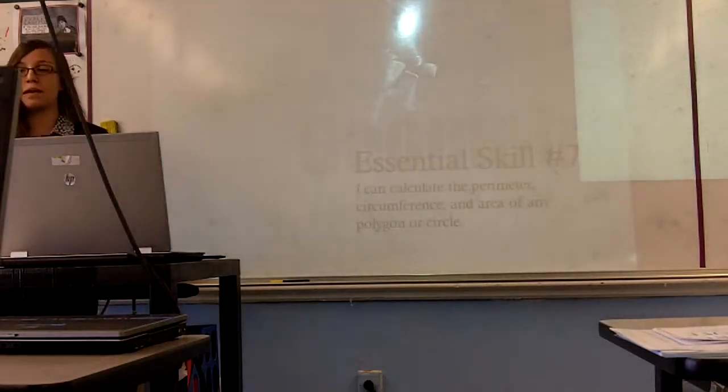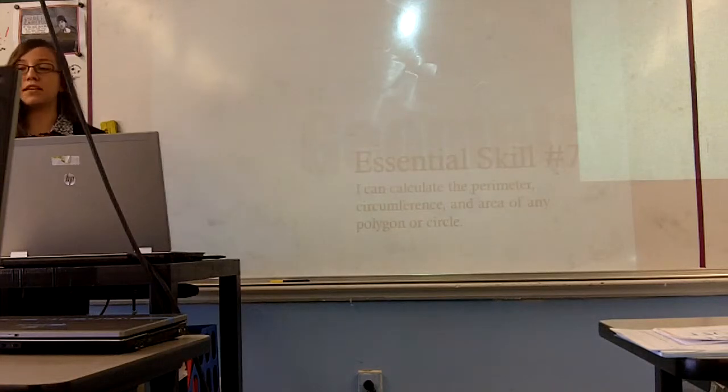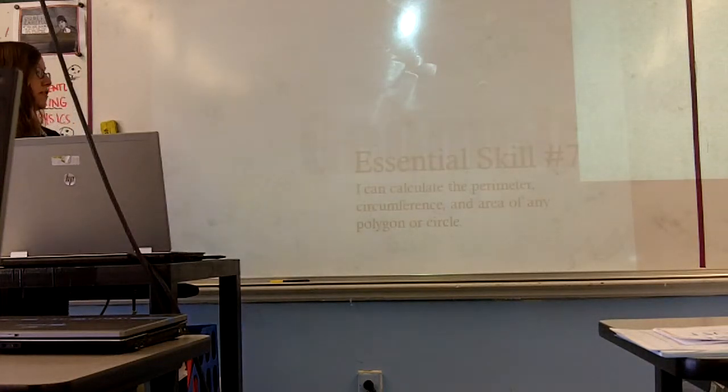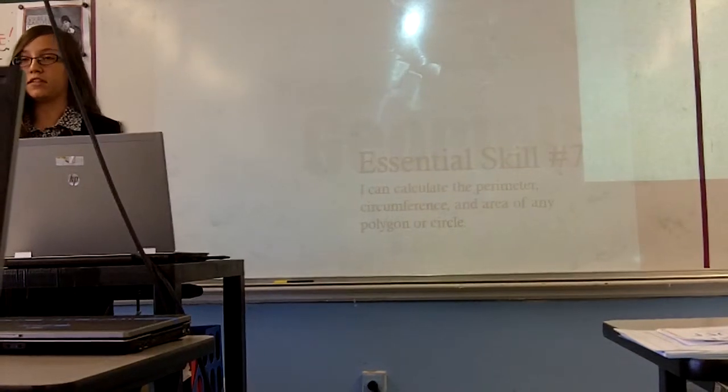First and foremost, I will demonstrate the knowledge I attained in geometry class. I will be presenting my mastery in essential skill number 7, which states I can calculate the perimeter, circumference, and area of any polygon or circle. During this unit I studied the specific properties of multiple-sided polygons and circles.